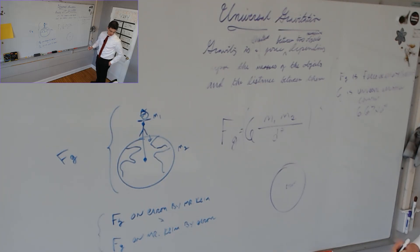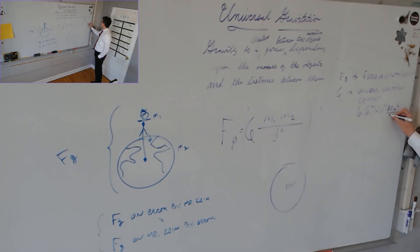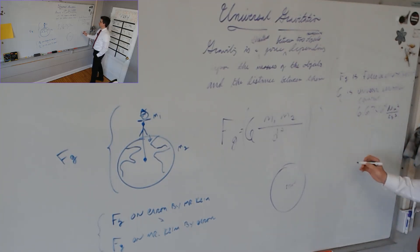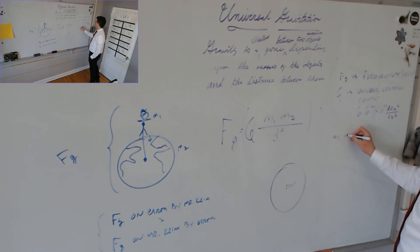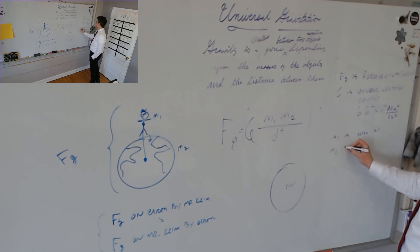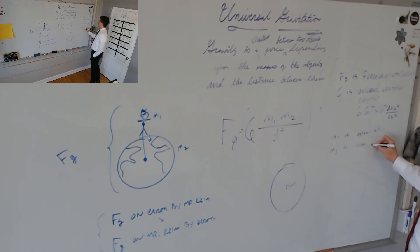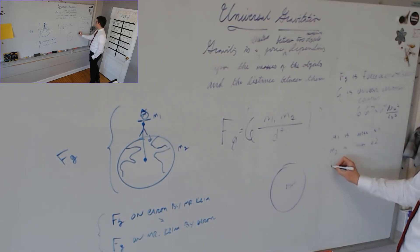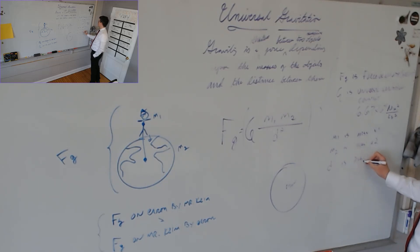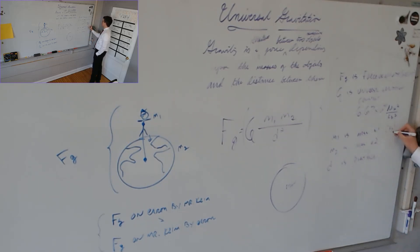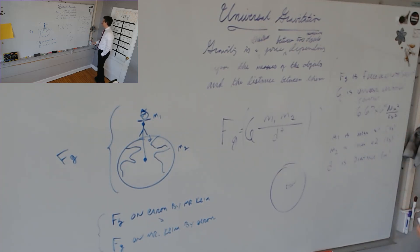The unit is Newton meters squared per kilogram squared. Second squared is in there — it's just within the Newton. M1 is the mass of object number one. M2 is the mass of object number two. D is the distance. Masses are measured in kilograms, distance in meters. We square this distance.